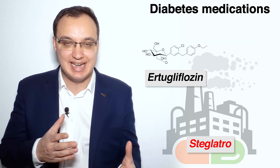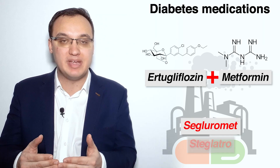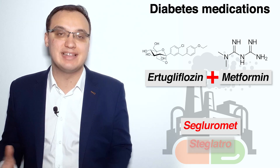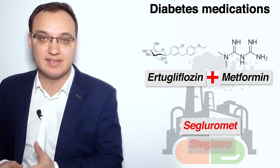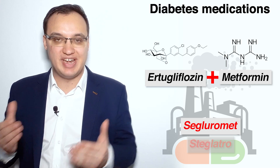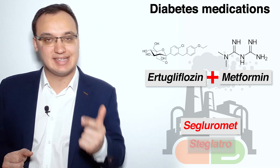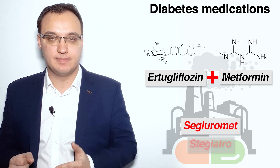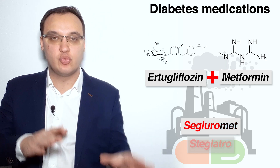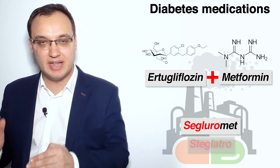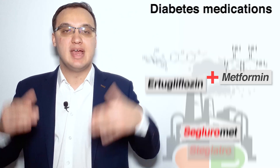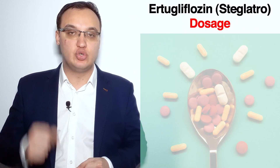Ertugliflozin's trade name is Steglatro, but when we add metformin together with ertugliflozin, we call it Segluromet. The names are very similar: Steglatro and Segluromet. The medication that contains metformin ends with 'met' — so Segluromet — making it easier to remember.